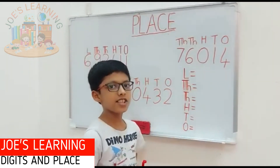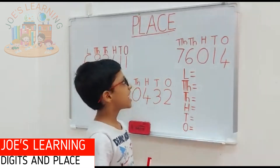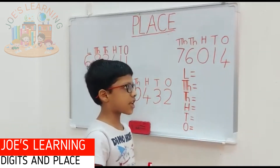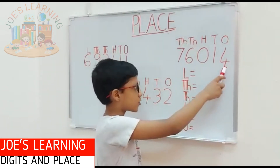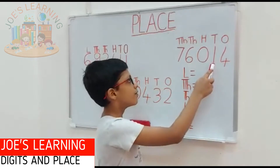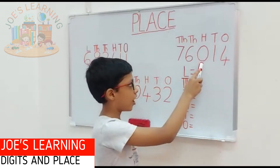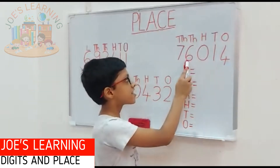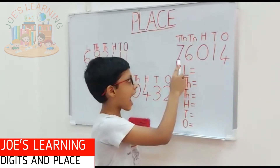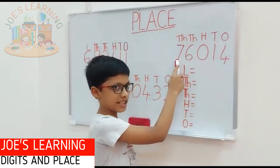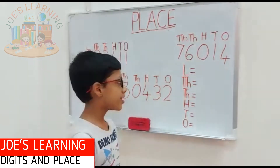Let us take a look at another example, that is 76,014. In this example, 4 is in the 1's place, 1 is in the 10's place, 0 is in the 100's place, 6 is in the 1000's place, and 7 is in the 10,000's place.